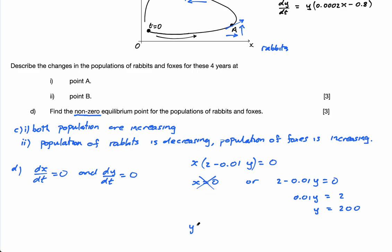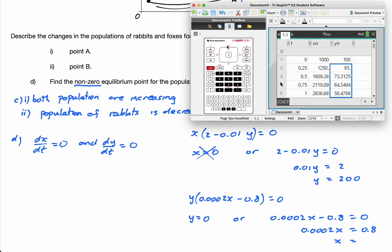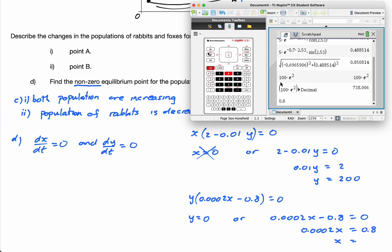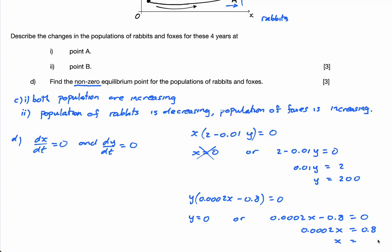For dy/dt = 0: y times (0.0002x − 0.8) = 0. This gives either y = 0 or 0.0002x − 0.8 = 0. Solving: 0.0002x = 0.8, so x = 0.8 ÷ 0.0002. Using a calculator, that gives x = 4000.